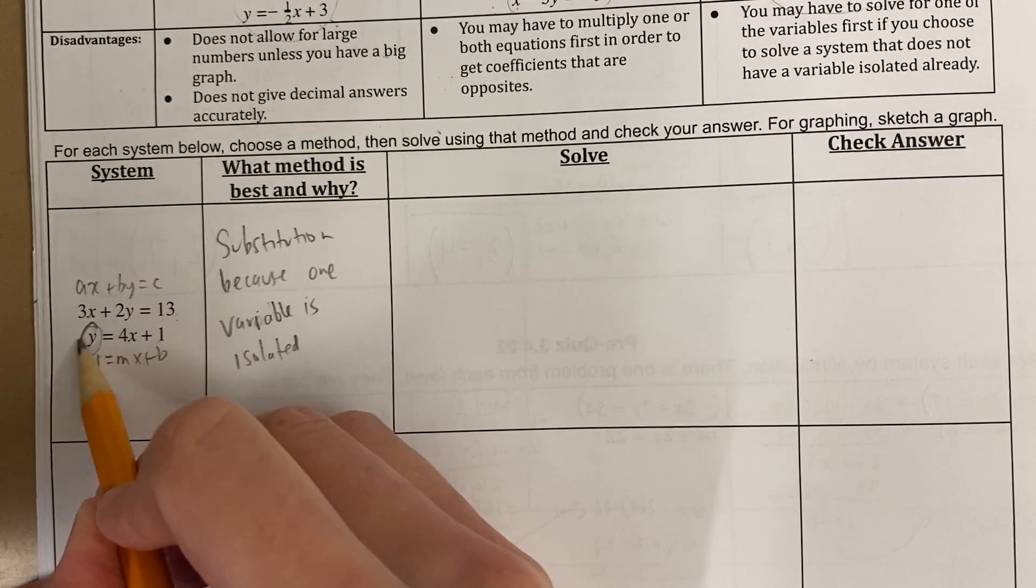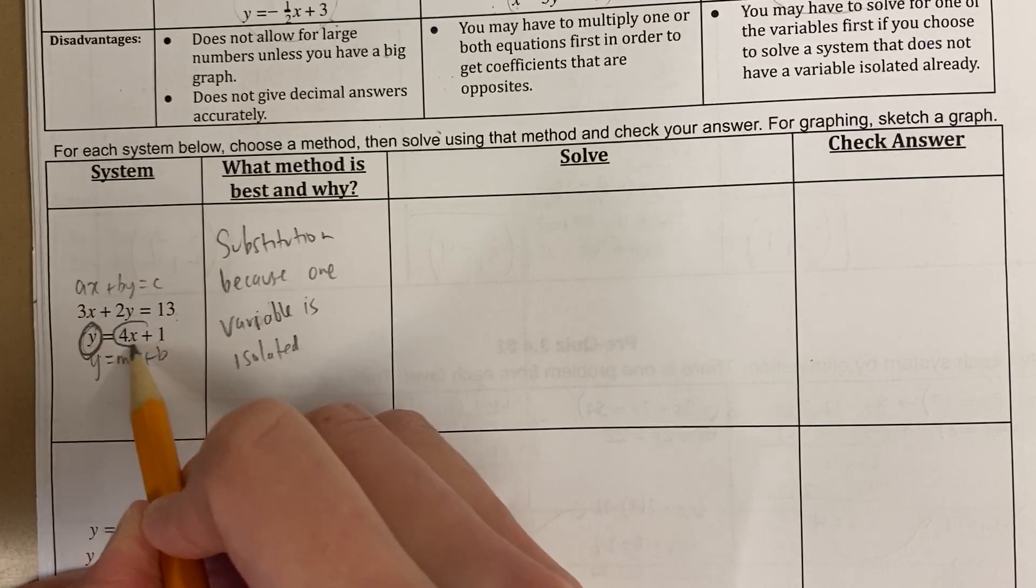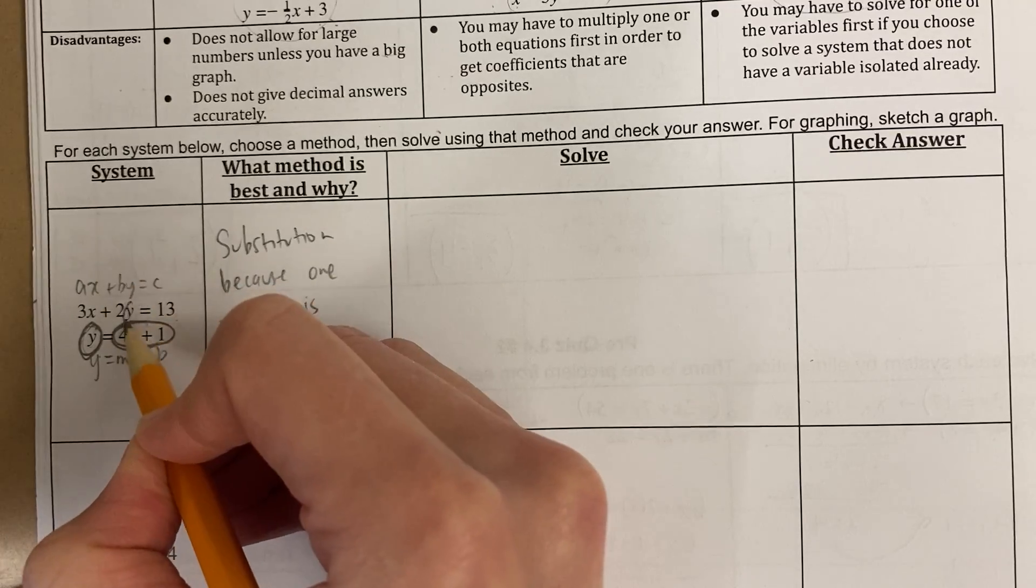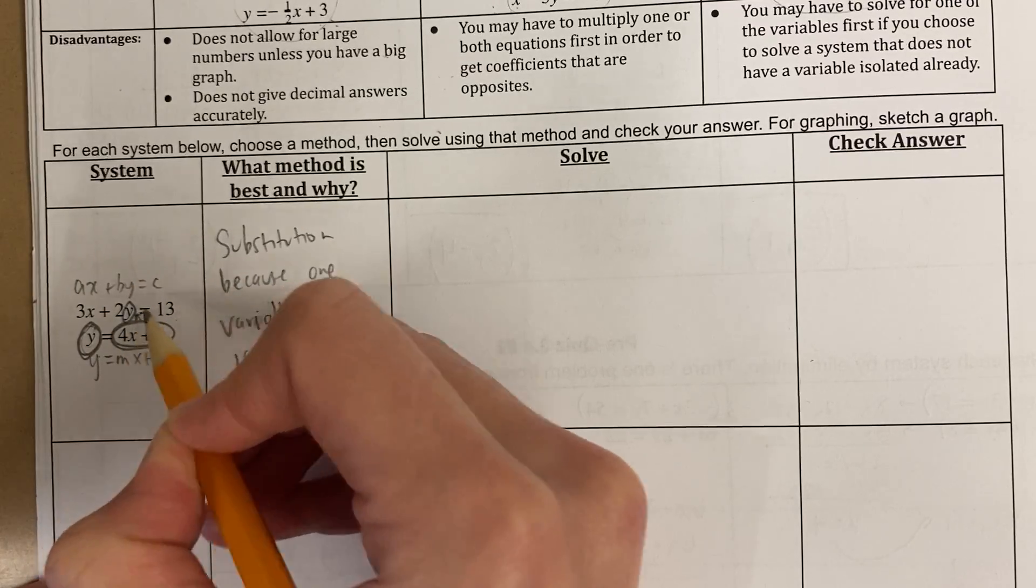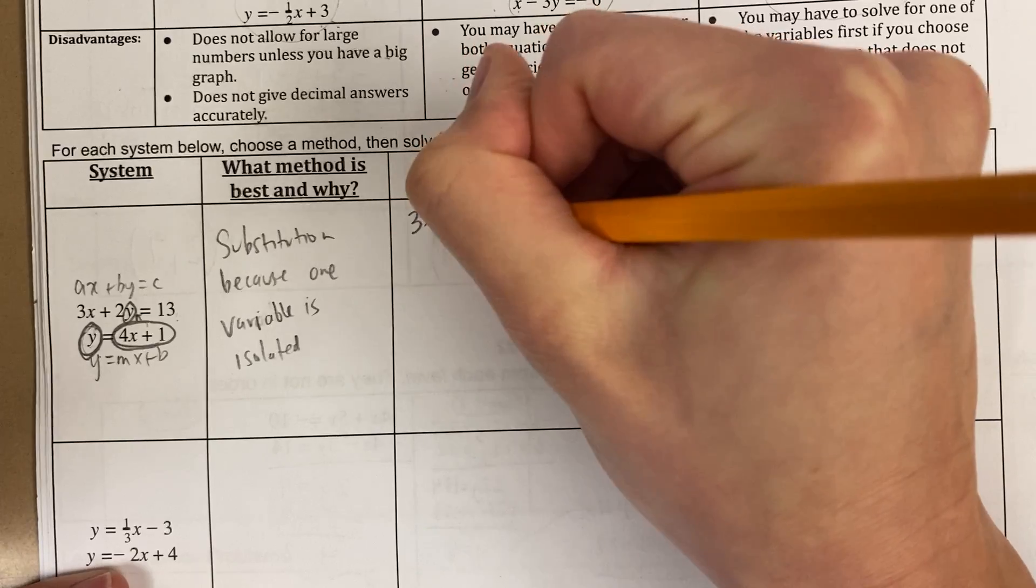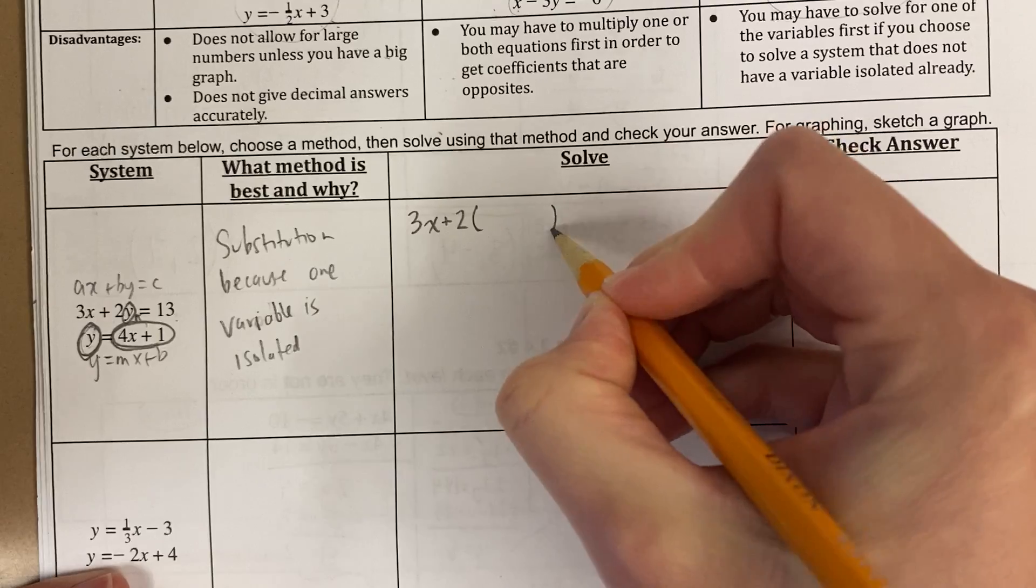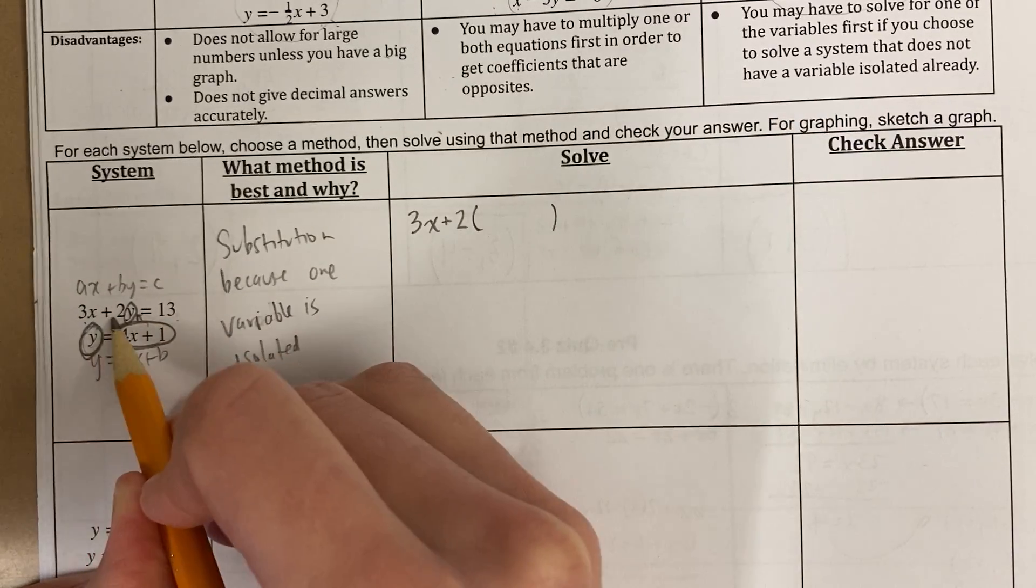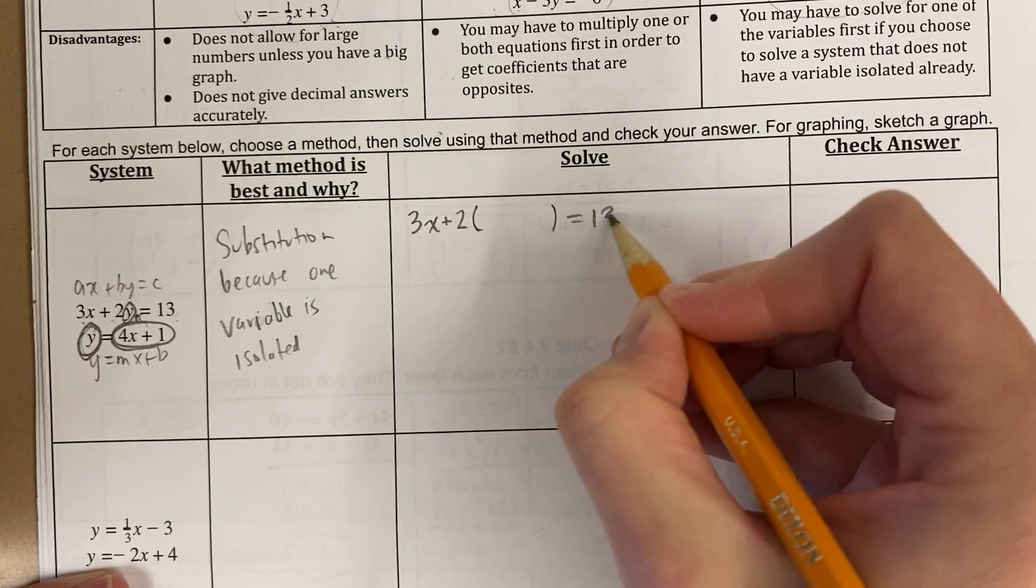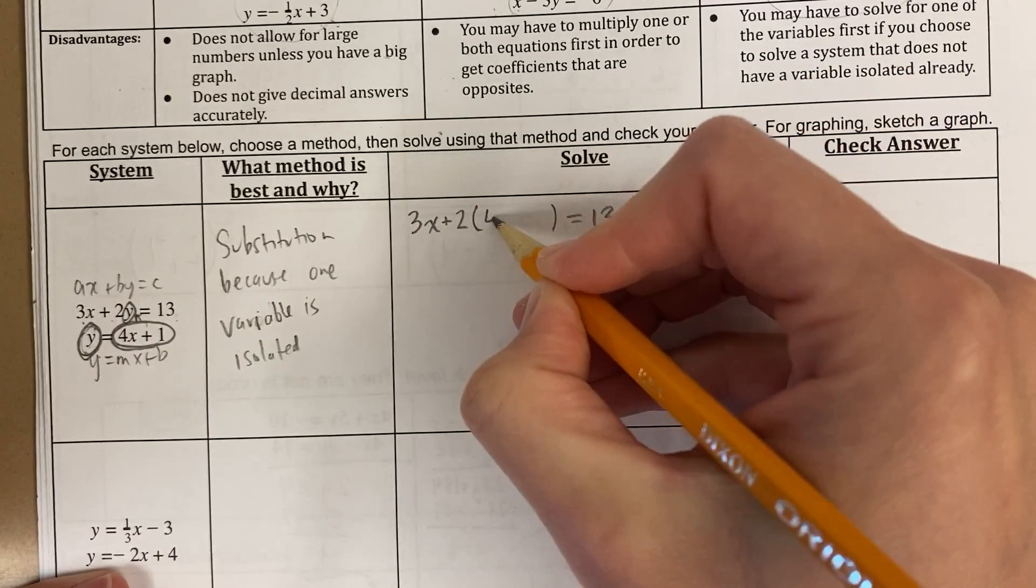So what I'm going to do is, this is y, what is y equal to? y is equal to this. So I'm going to take this y and substitute in this expression that's equal to it. So it's going to look like this to start off. I'm writing 3x plus 2 instead of y, and instead of y I'm writing 4x plus 1.